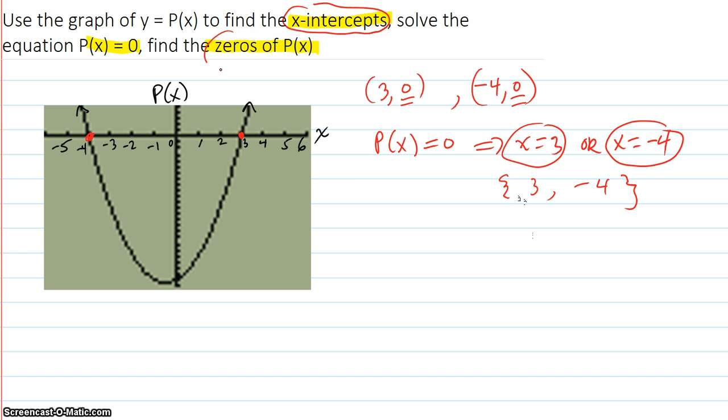Then, the last one is the zeros of p of x. The numbers that make p of x zero. Well, those are 3 and negative 4.